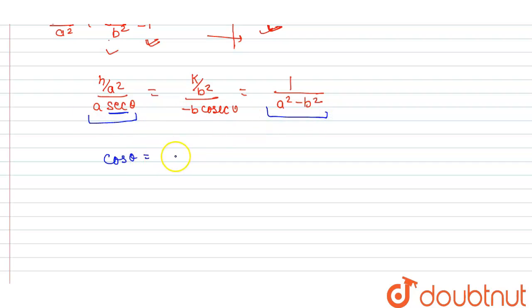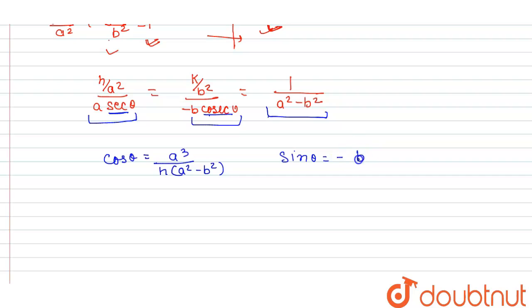Similarly, comparing the y-coefficients: k/b² divided by -b·cosecθ. Since cosecθ = 1/sinθ, equating these gives sinθ = -b³ / [k(a² - b²)].